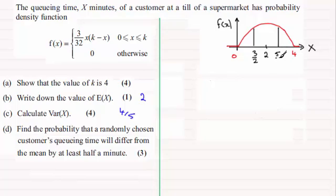And that probability is represented by the area to the left of 3 over 2 or to the right of 5 over 2 and both these areas are exactly the same because of the symmetry of this curve.